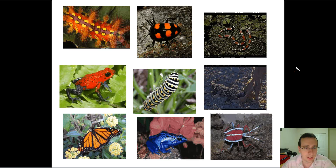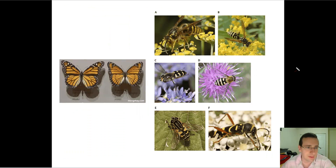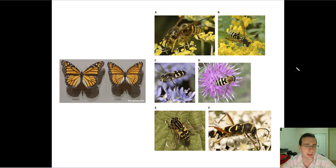Now the cool thing is that it is possible for an animal not to actually be dangerous, but just look dangerous — to cheat the predator into not eating it. This is what we call Batesian mimicry, discovered by a scientist in the 1800s who was puzzled by the fact that so many different kinds of wasps, butterflies, and other animals all looked similar to each other, and wanted to understand why.